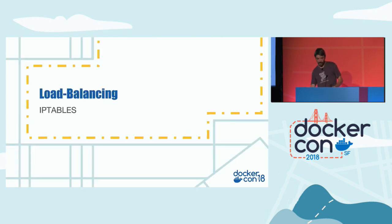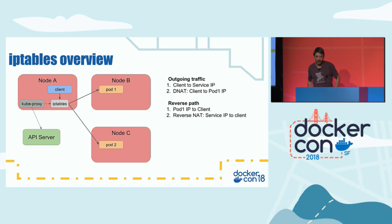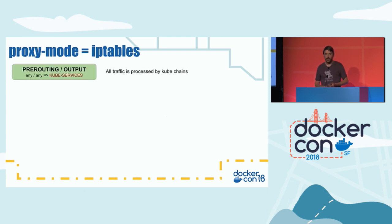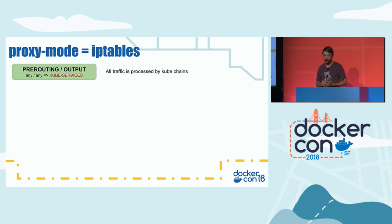Let's talk about IP tables. When a client sends traffic to the service IP, IP tables intercepts it and the first thing it does is DNAT — it changes the destination IP to one of the pods providing the service. Traffic goes to the pod, comes back, and is reverse-NATted to go back to the client with the correct IP. Kubernetes hooks into the pre-routing and output chains of the NAT table, and all traffic is sent to a chain called kube-services.